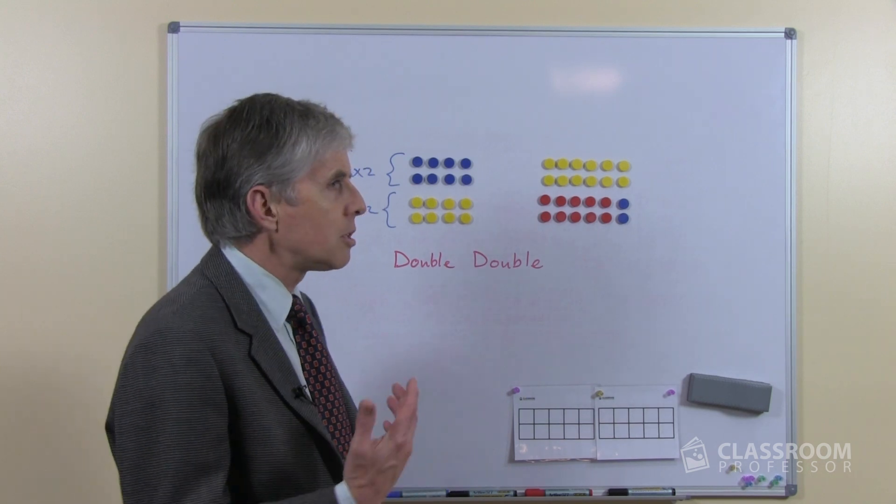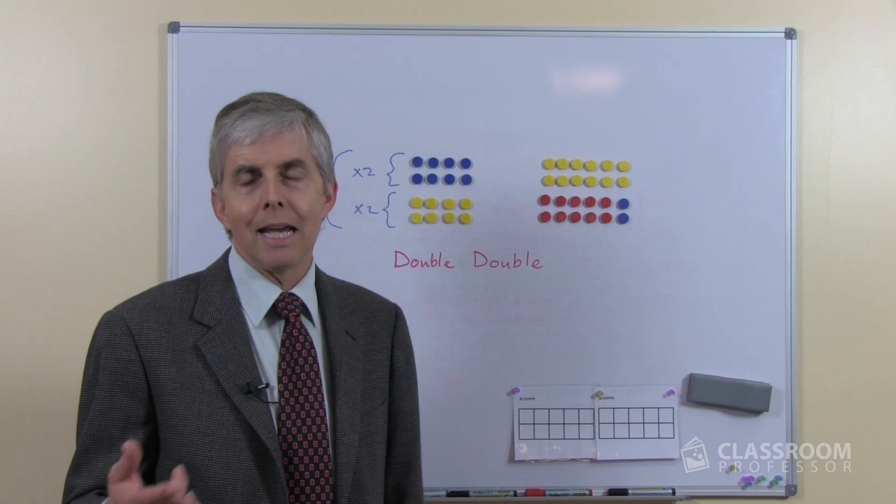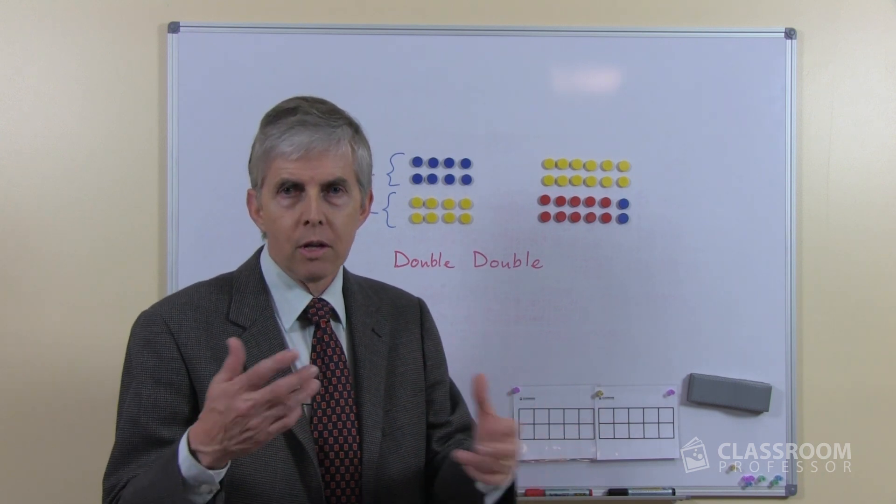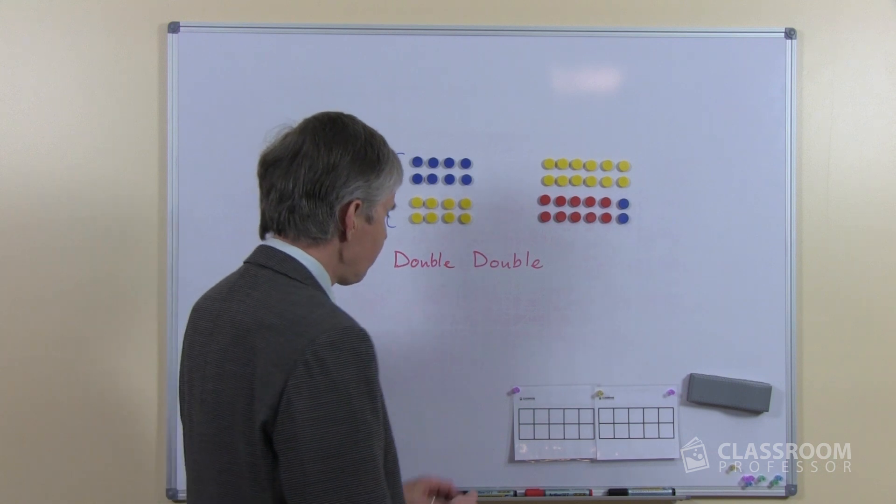So we want the students to think about 12 as being 10 and 2. Double 10 is 20, double 2 is 4, that's 24, that sort of thinking can be very helpful.